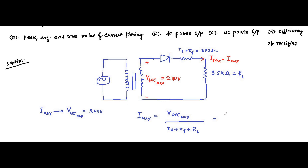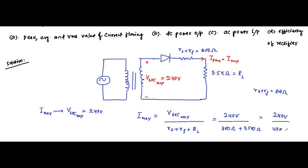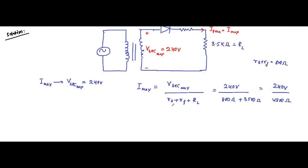The secondary winding voltage maximum value is 240 volt. The secondary winding resistance plus the forward resistance (RS + RF) has a value of 800 ohm, plus the load resistance of 3.5 kilo ohm, which is 3500 ohm. So it is 240 volt divided by 4300 ohm, which equals 0.05581 ampere, or 55.81 milliampere — that is the peak or maximum value of the current.